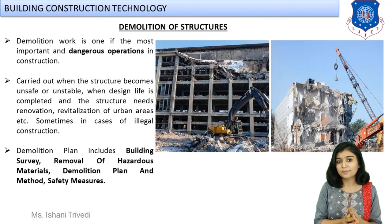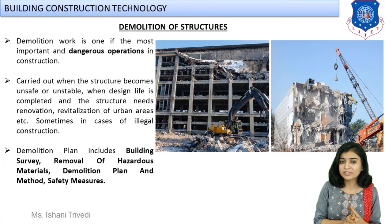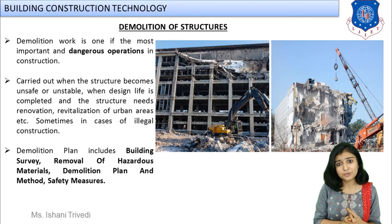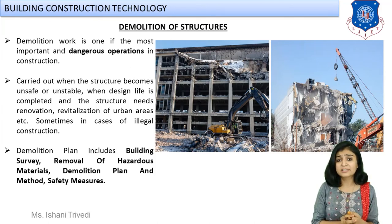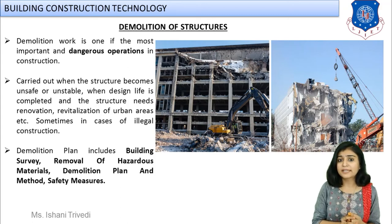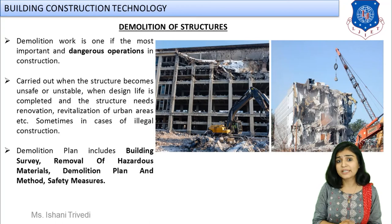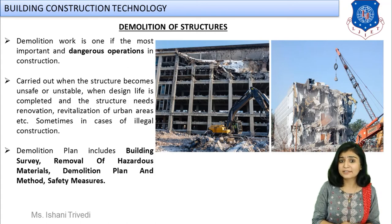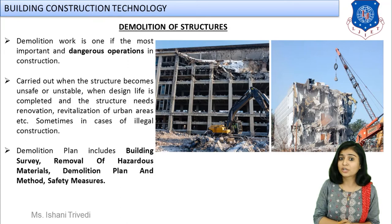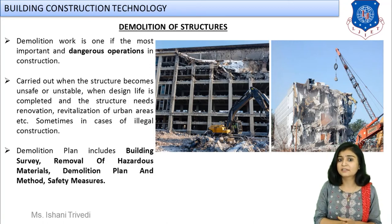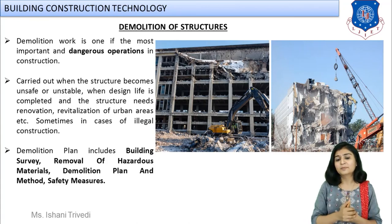Demolition is one of the most dangerous operations. You must make sure that workers, the surrounding area, vehicles on the road, and pedestrians are all safe. Proper distances and provisions must be maintained. The demolition plan includes first a survey to find out all installations inside the building — electrical wirings, pipelines, sanitary fittings, gas systems, explosive systems, and any hazardous material. All these installations must be removed manually first using the building plan, and then demolition work is done.